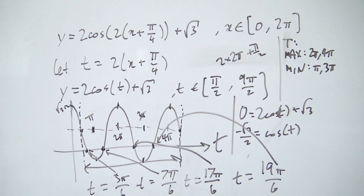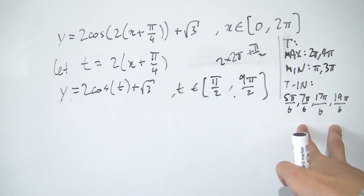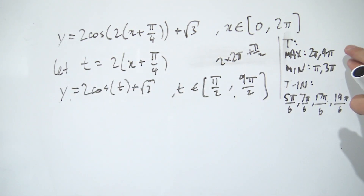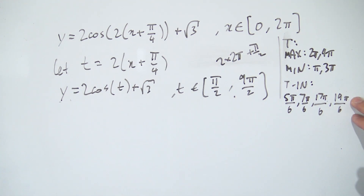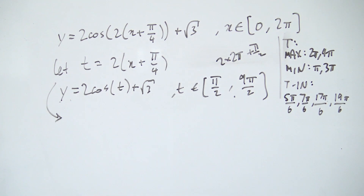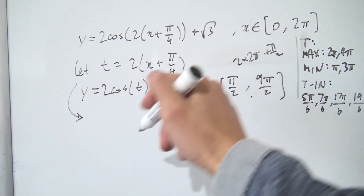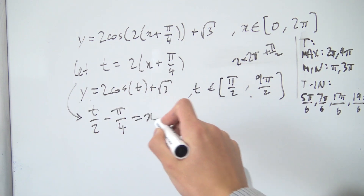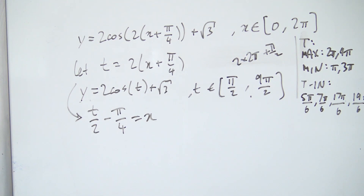So those are all our t-intercepts, and all this information is why we switched to the t-domain — it makes it easier to find those intercepts. Now we can transform these t-values back into x-values using our substitution. Rearranging t = 2x + π/4, we get x = t/2 − π/4. Now comes the more tedious part: we plug each t-value into this to get our x-values.